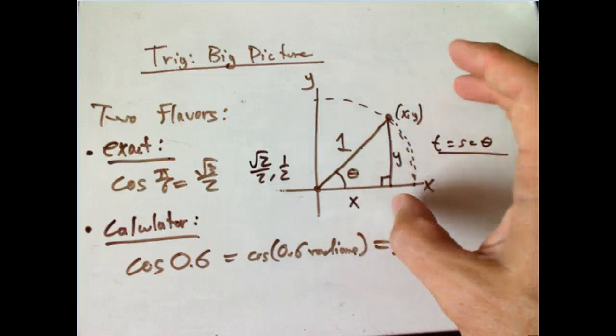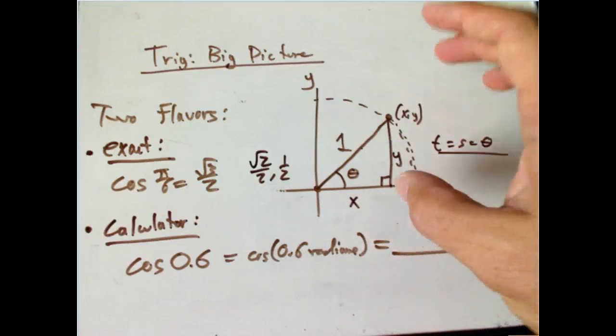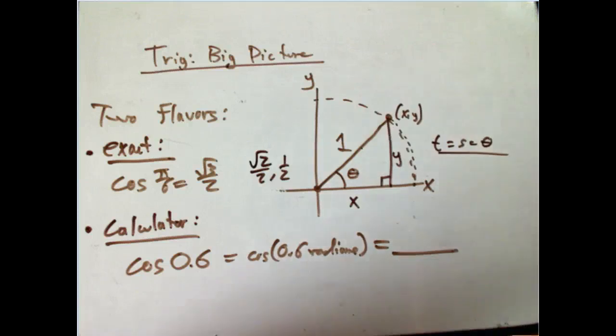So everything comes back to this base case. Whether or not you're doing triangle trig or circle trig, it all comes from here. And that's where, hopefully, there's a pretty clear overlap between the two perspectives. So let me show you one of the generalizations.